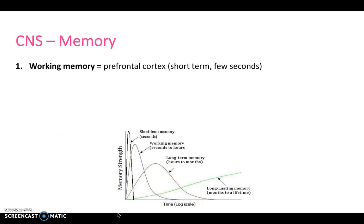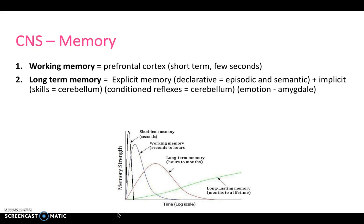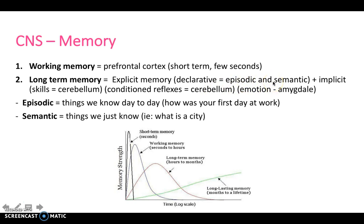In terms of memory, we have several different types. Working memory is located within the prefrontal cortex and is our short-term memory lasting a few seconds. Long-term memory is our explicit memory, which can be declarative, either episodic or semantic. If it's not explicit, it's implicit, which is memory that remembers skills or conditioned reflexes, like the cerebellum, or emotion, like the amygdala. Episodic are things we know day to day, like how was your first day at work. Semantic is things we just know, like what is a city or what is a banana.